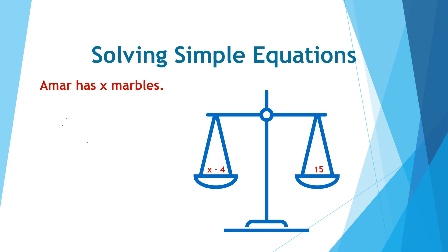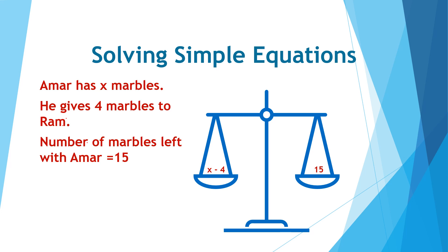Amar has x marbles and he is giving 4 marbles to Ram — this is represented in the left side pan of the balance. The number of marbles left with Amar, which is 15, is represented on the right side of the weighing scale. So the equation is x minus 4 is equal to 15.